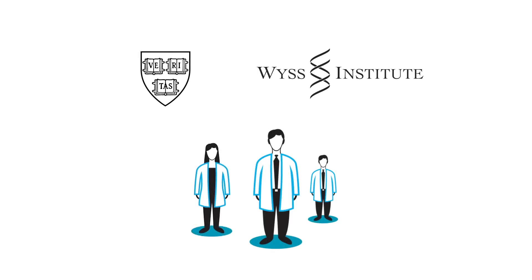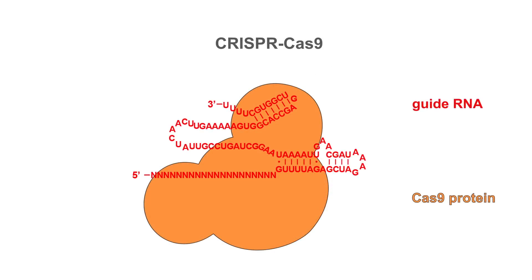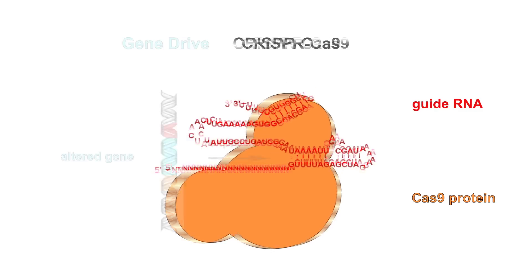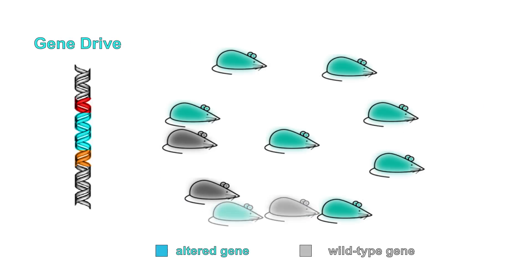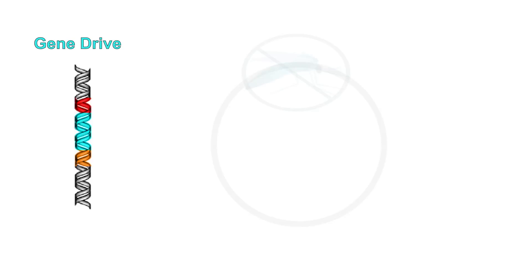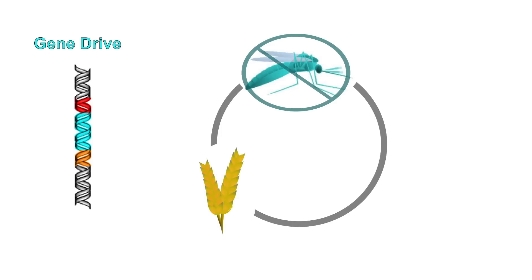Scientists at Harvard's Wyss Institute have shown how the CRISPR-Cas9 gene editing system can be used to build a gene drive capable of spreading particular alterations in the wild. This technology could be used to eradicate insect-borne diseases, empower sustainable agriculture, and promote ecological conservation.